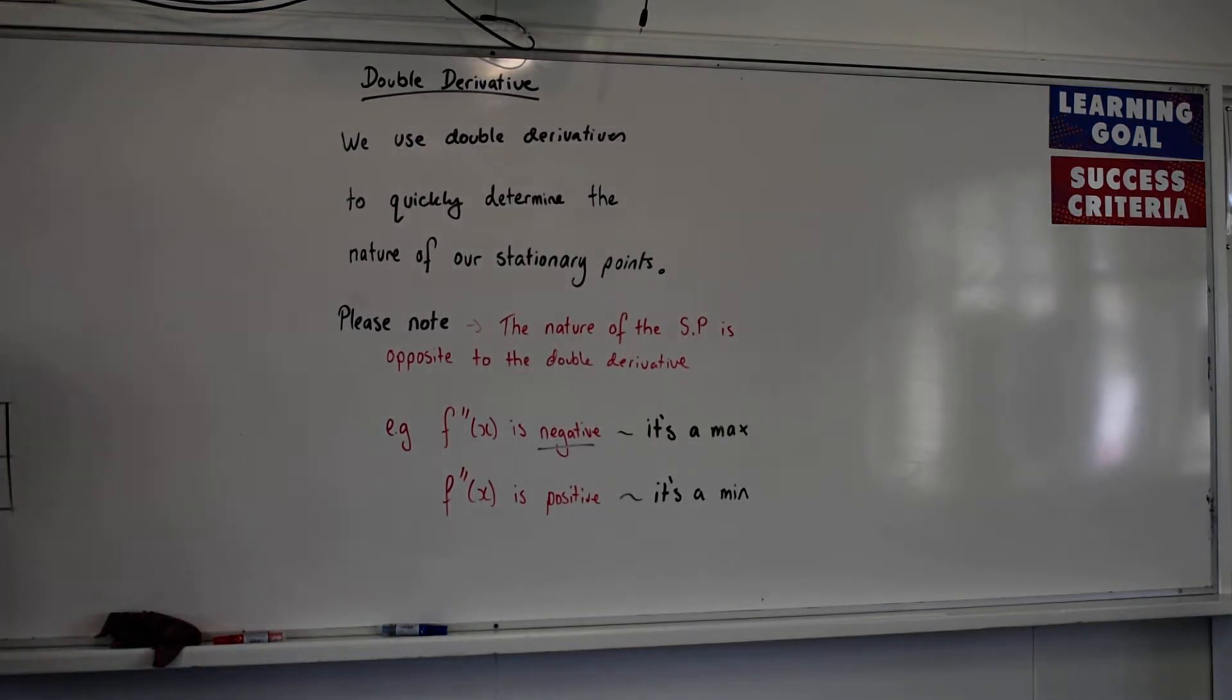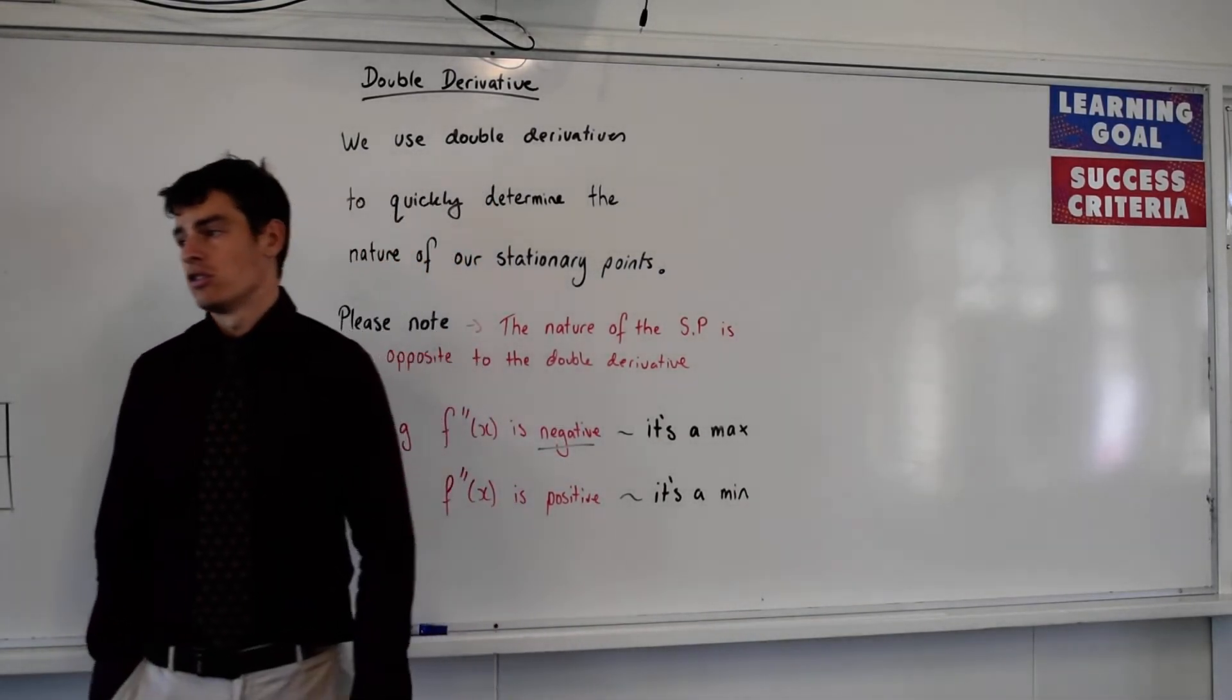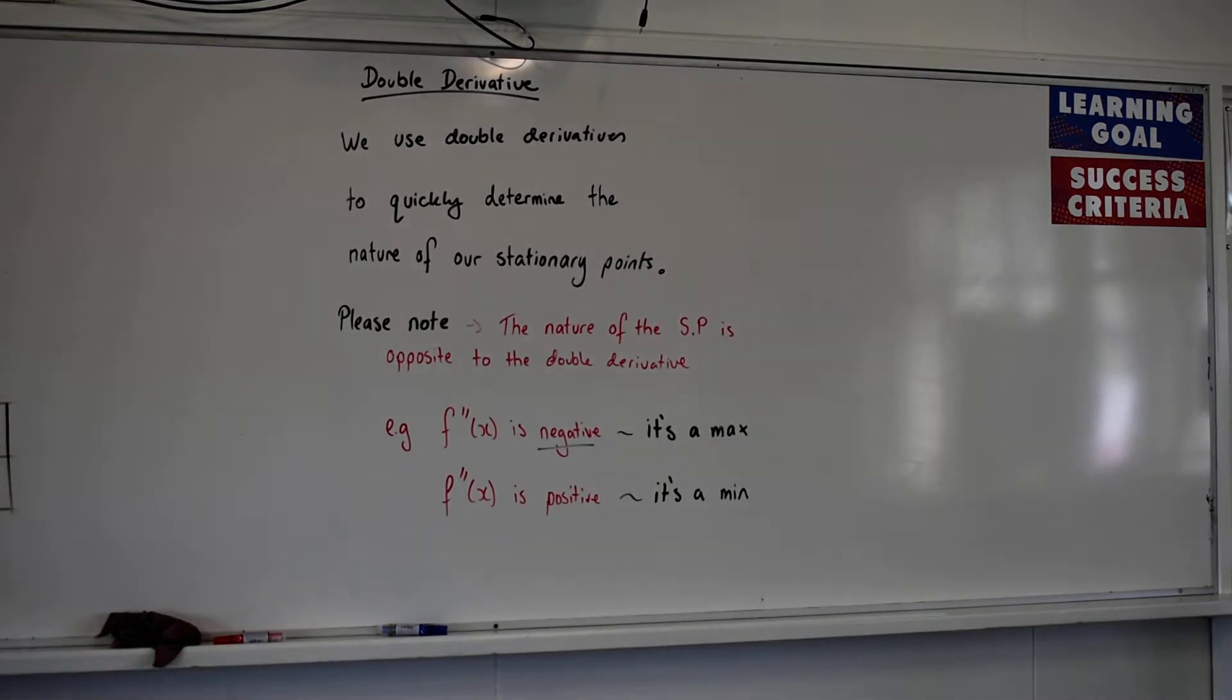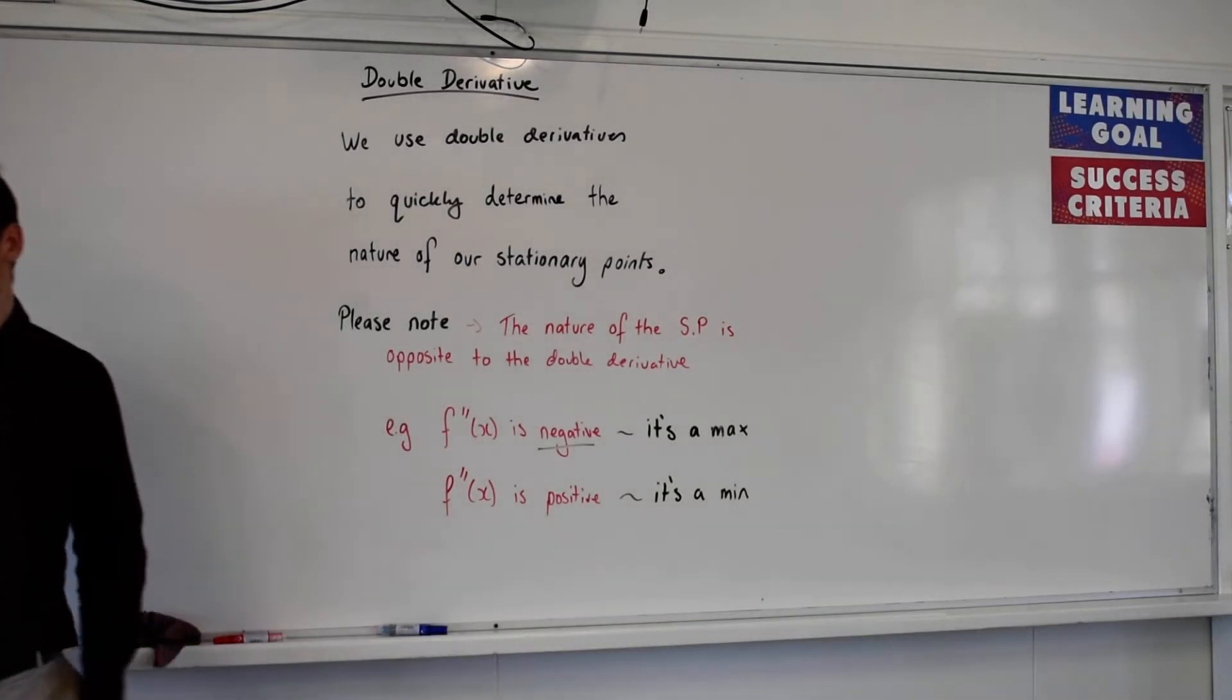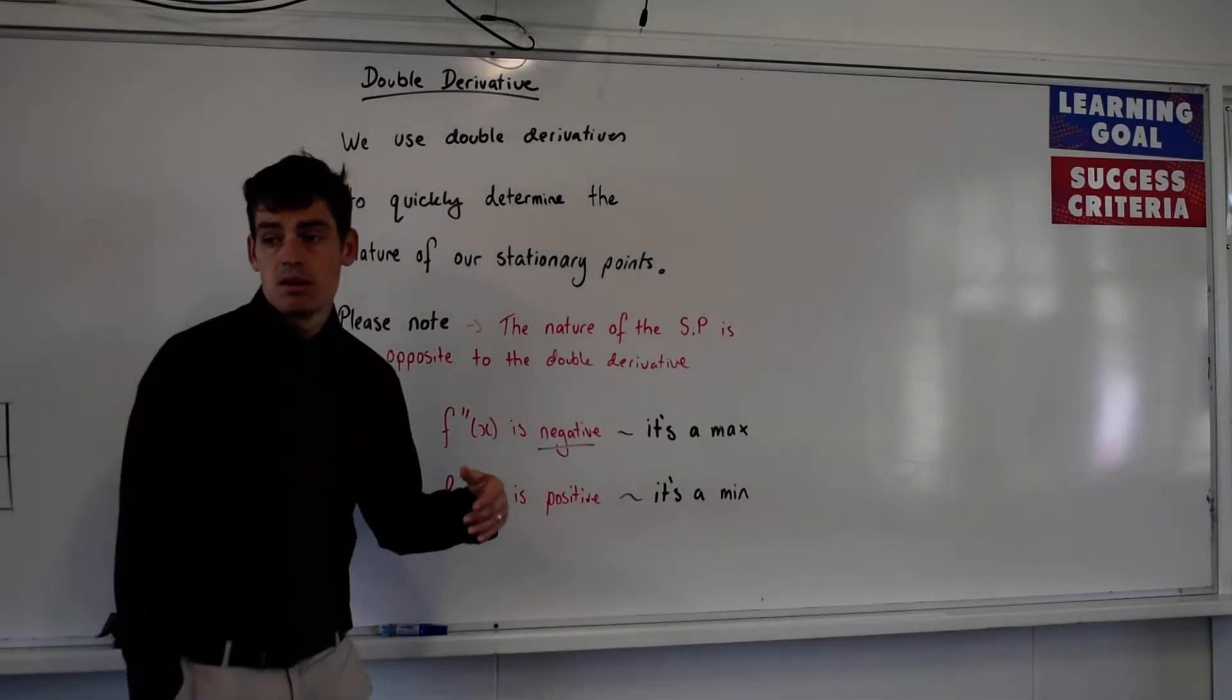The take home thing to remember, if you can remember nothing else about double derivatives, it's the opposite of the nature of the stationary point. So if you get a negative double derivative, if you get a negative value when you sub your stationary point into your double derivative, you're dealing with a maximum. If you get a positive value, then you're dealing with a minimum.